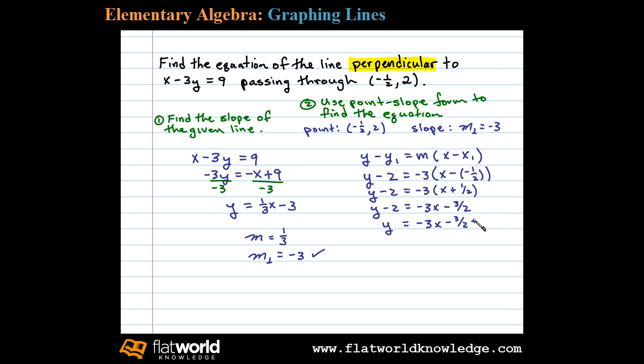Now we need to add negative 3 halves and 2. That requires a common denominator. We can think of 2 as 2 over 1 and multiply numerator and denominator by 2, and that will leave us with negative 3x minus 3 halves plus 4 halves. Negative 3 halves plus 4 halves is 1 half.